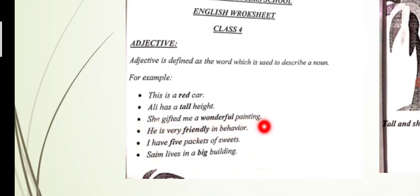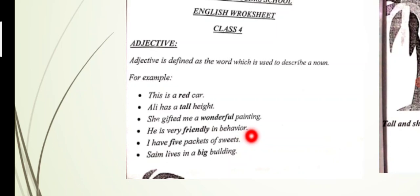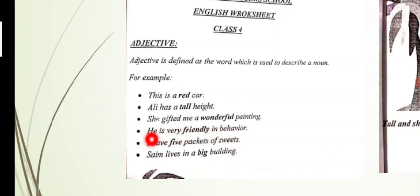Then: 'She gifted me a wonderful painting.' Usne mujhe ek bahut achi, shandar painting gift ki. So painting is the noun, and wonderful tells us how the painting is — bahut achi hai. So 'wonderful' is the adjective. Then: 'He is very friendly in behavior.' Woh bahut jaldi dost bana leta hai, bahut friendly hojata hai. So 'friendly' is the adjective describing the person.